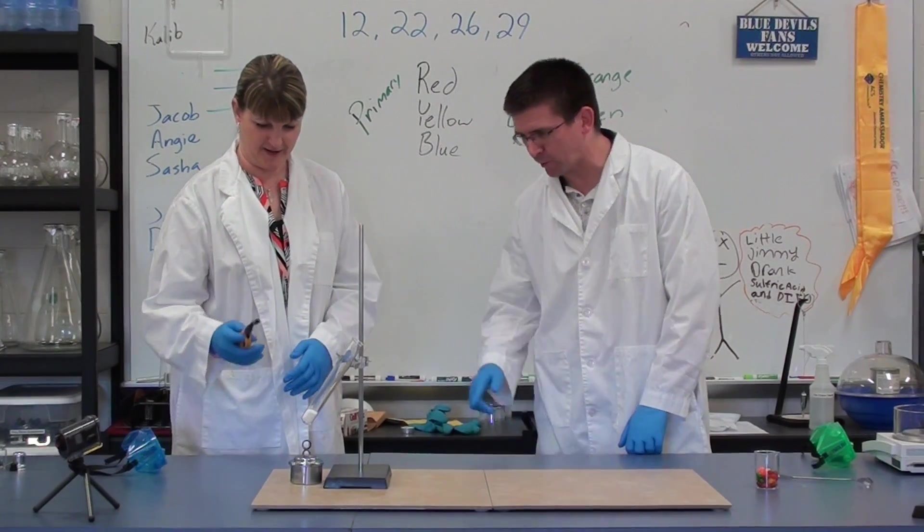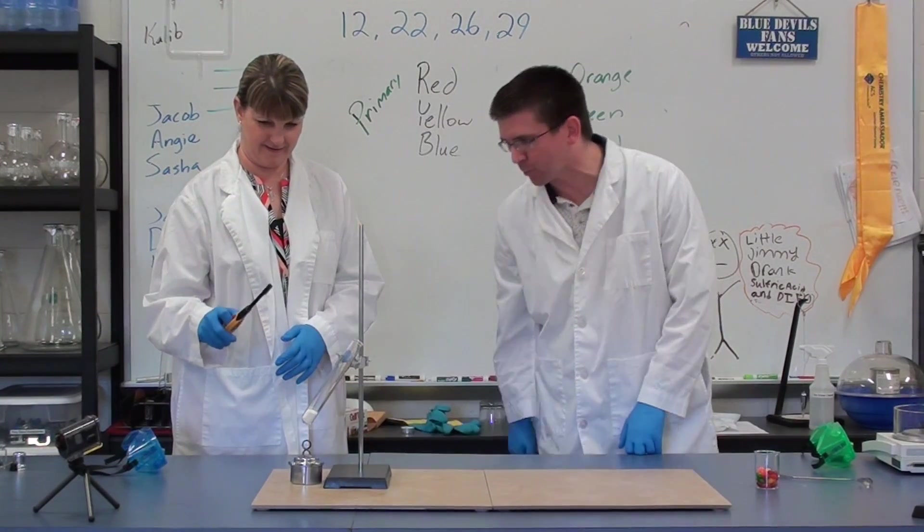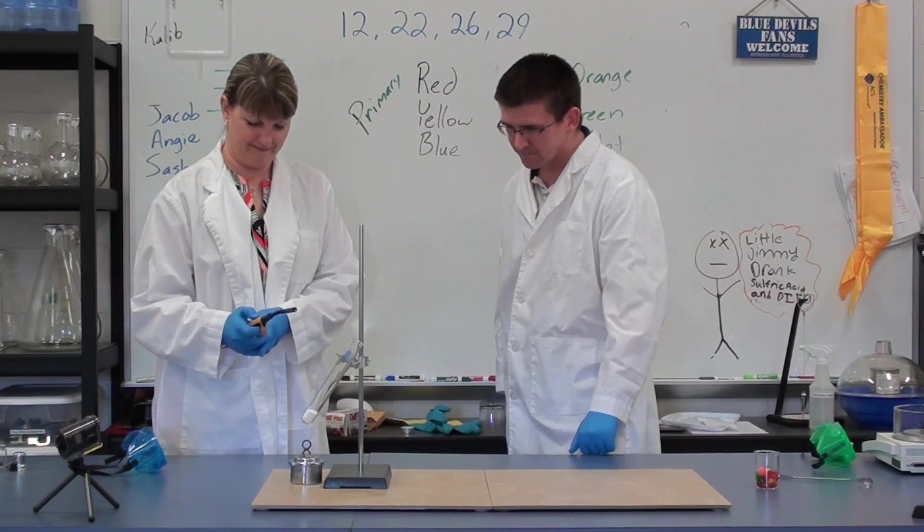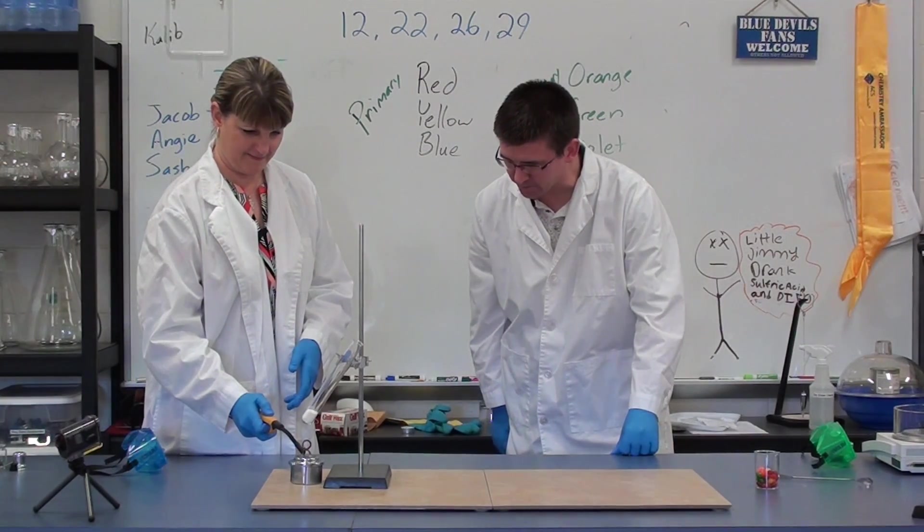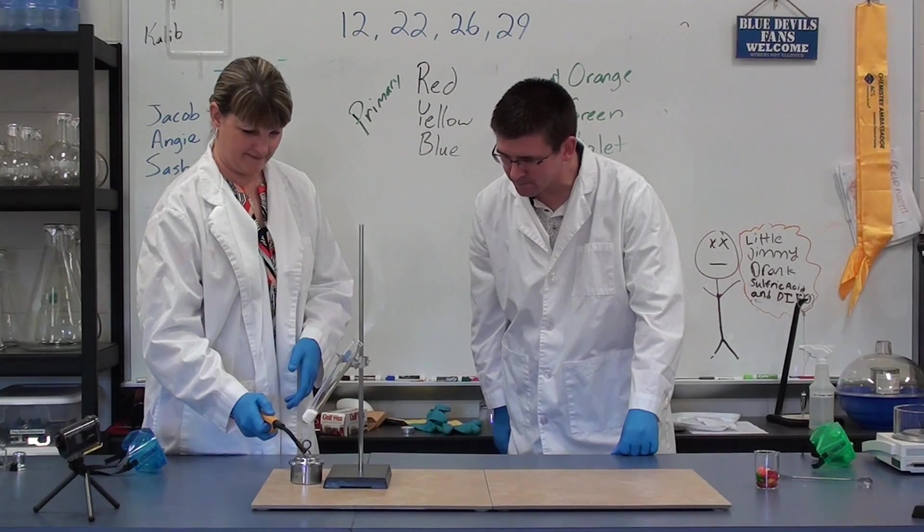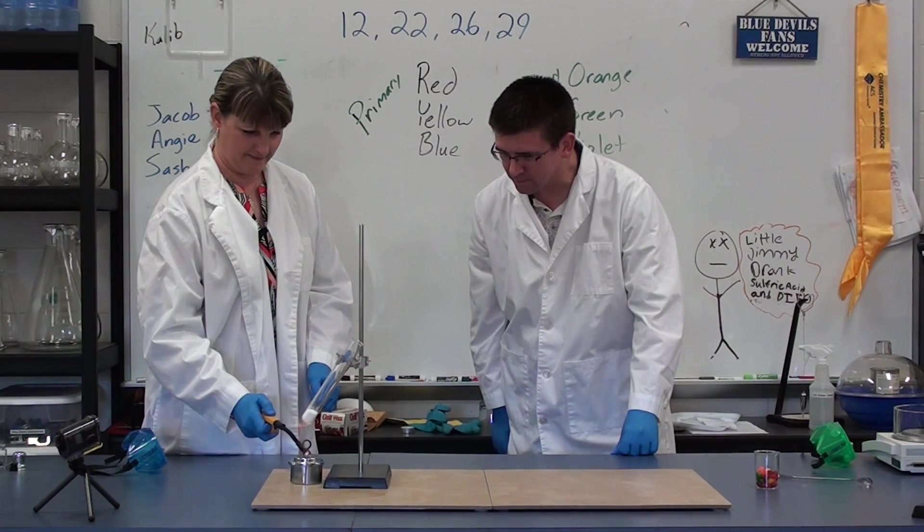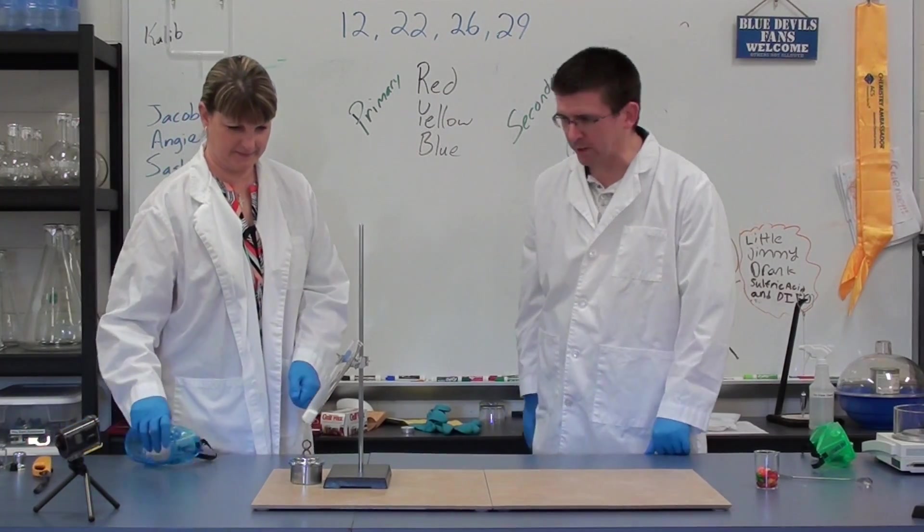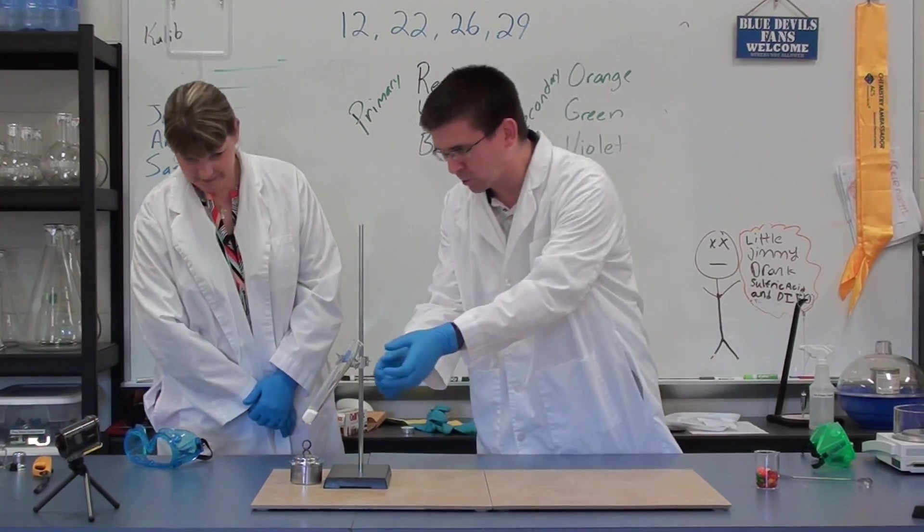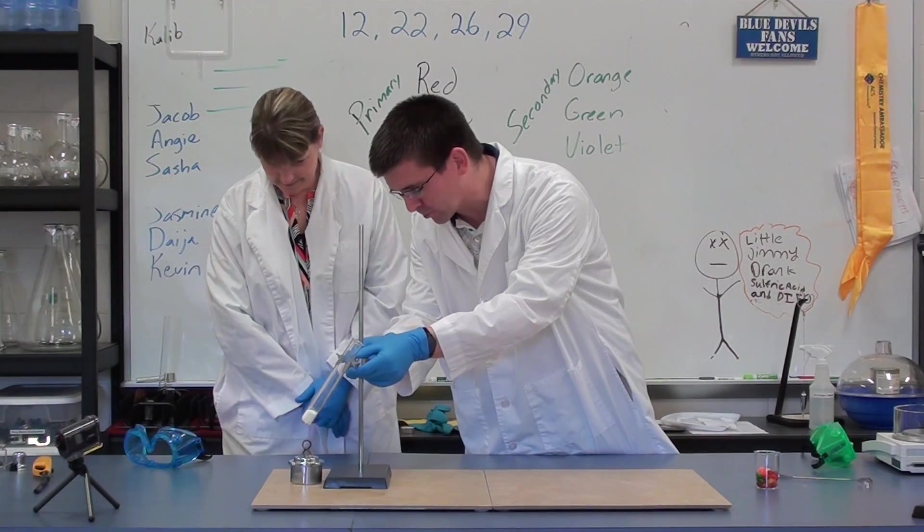So if you can light our burner there, you just want to hold the flame kind of down here close to where that wick is. And you'll need to hold it there for a couple seconds, it'll light up. And it'll probably take a minute or two, but we're going to melt our potassium chlorate. I'm going to lower it down just a little bit, get it closer to that flame.